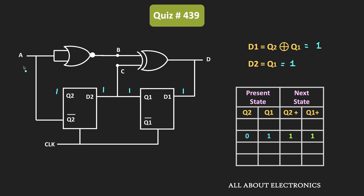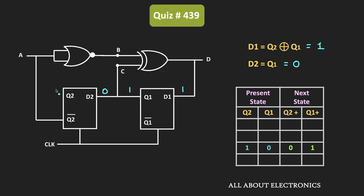Now let's assume the initial value of Q2 and Q1 is 1 and 0. With this value, D1 = 1 XOR 0 = 1, and D2 = Q1 = 0. So D1 and D2 are 1 and 0 respectively. After the first clock pulse the value of Q1 becomes 1 and Q2 becomes 0, meaning the output changes from the initial state, so this case is not stable.